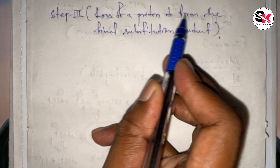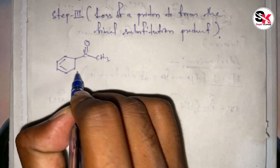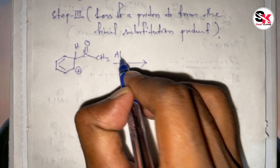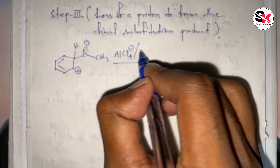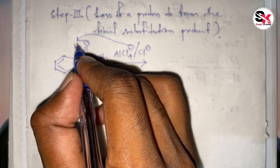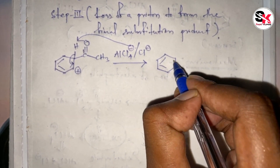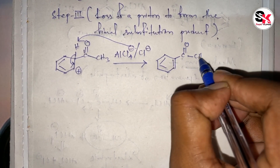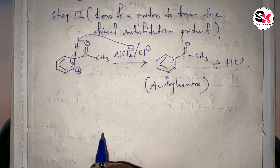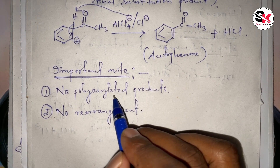Step three is the loss of a proton to form the final substitution product. The sigma complex formed in the second step loses one proton to form the final substitution product. This proton is taken off by the AlCl4⁻ ion formed in the first step, which attacks the proton, and the electrons migrate to reform aromaticity, giving the final acylation product.